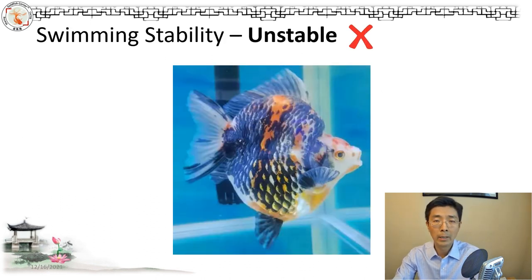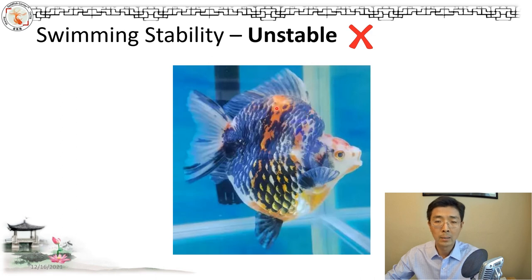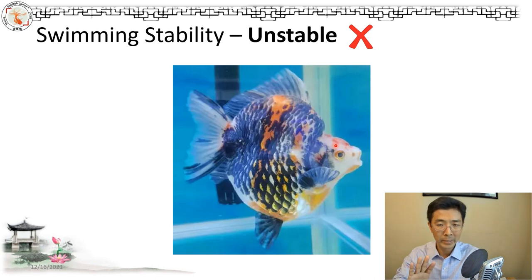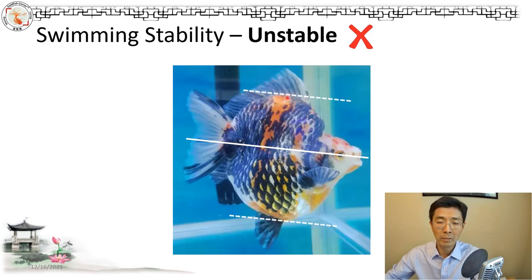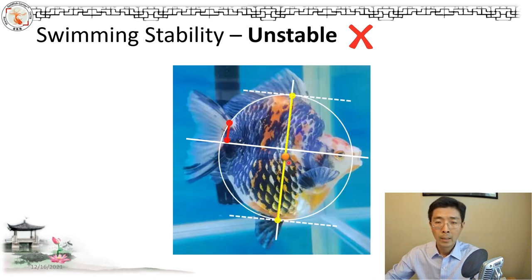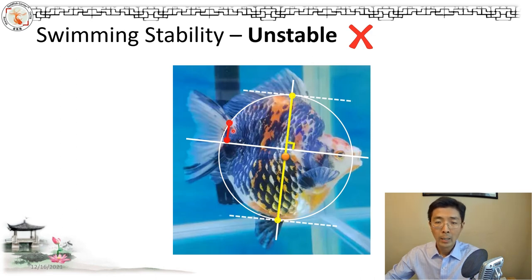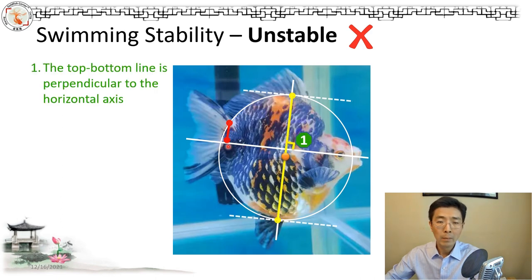Let me give you a few examples. This first one is an unstable case, or maybe a critical stability case. This Yuking is a tricolor — it has orange, white, and black, with some occurring patterns on the scale. So I draw my horizontal axis, then push it up and down to find the peak and bottom point of the fish body. Then I draw the caudal peduncle point, which becomes my tail line. The first check: we see 90 degrees between my horizontal line and my vertical line — that's good.